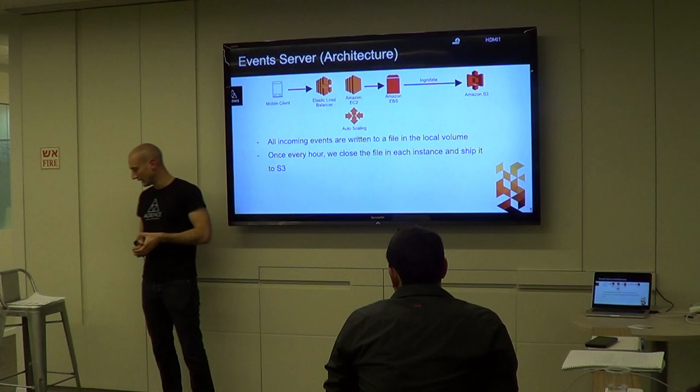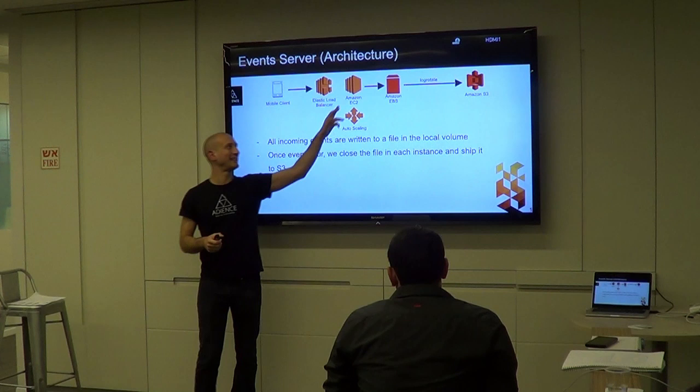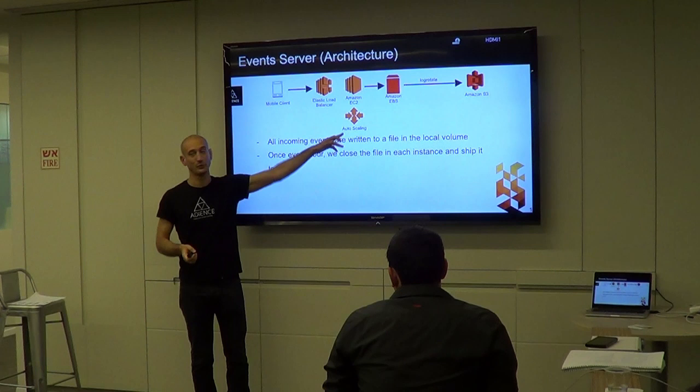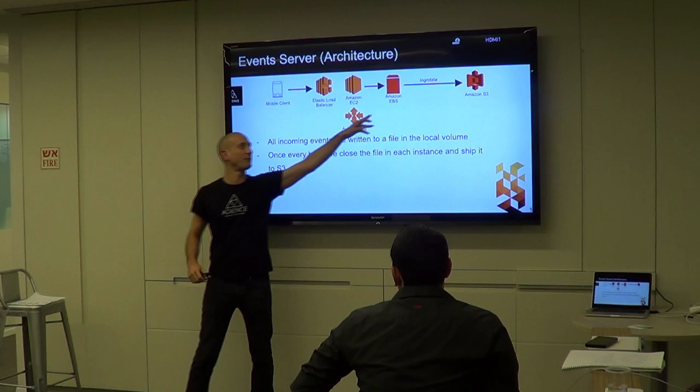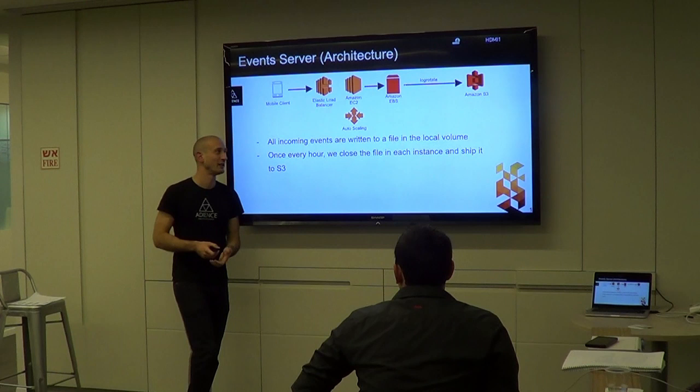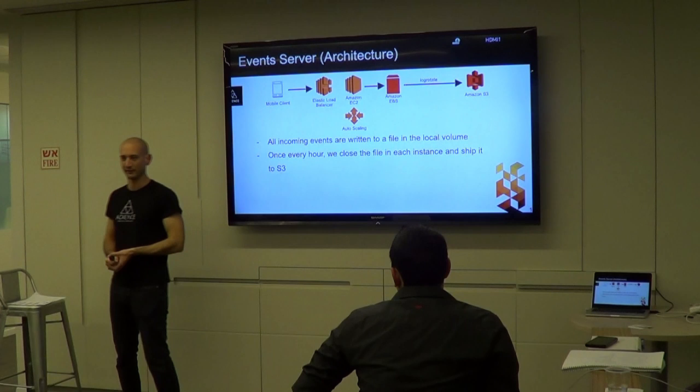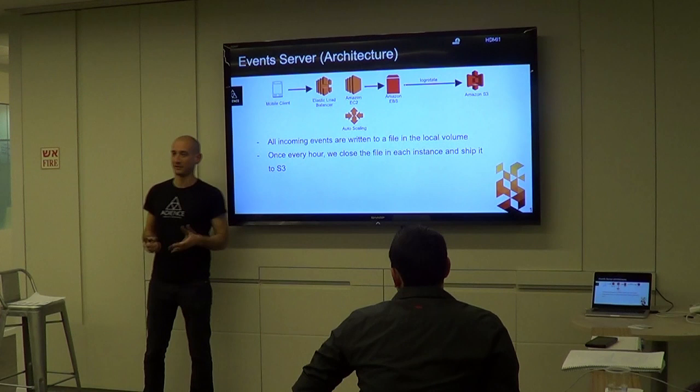That solution has its downsides. Unlike before, we can't have an instance go down here. If we remove an instance dynamically using autoscale because load is low, we lose the file accumulated during the last hour - that's a lot of events wasted. So we can't automatically scale down with this approach. There's room for improvement, but it was the easiest and simplest way to build it at the time.